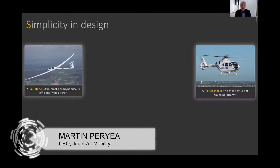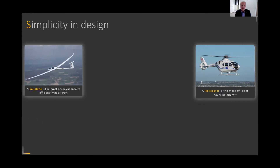We took the attributes of a sailplane — one of the most efficient aircraft for cruise flight — and we married that technology up with the capabilities of a helicopter, which is the most efficient air vehicle for vertical flight operations. By combining these two technologies, we created the Jaunt Journey, specifically targeting the urban air mobility and air taxi market.